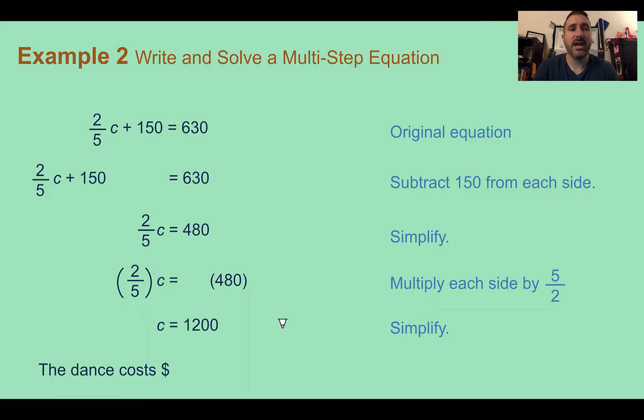Now, if we want to solve it, we take our equation and we're going to start undoing all the operations until we figure out what c is equal to. First, I see adding, and then I see a fraction here. This is actually multiplication with a fraction. We learned about multiplying by the inverse in the previous lesson, so we're going to use that method. First, let's get rid of that plus 150 by doing the opposite. So minus 150, and then whatever I do to one side, do to the other. So I'm subtracting 150 from both sides. I'm left with two-fifths c is equal to 480.